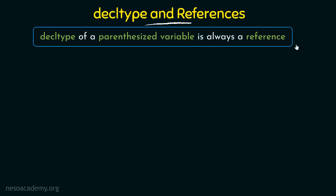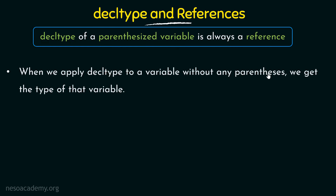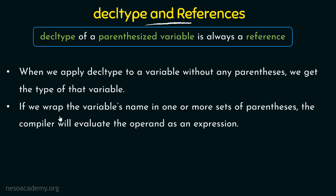Here is another very interesting and important thing to keep in mind: decltype of a parenthesized variable is always a reference. When we apply decltype to a variable without any parenthesis inside, we get the type of that variable. But if we wrap the variable's name in one or more sets of parentheses inside, the compiler will evaluate the operand as an expression. So with decltype((i)), the compiler is going to evaluate i as an expression and what it returns is a reference.